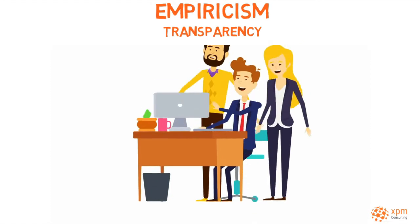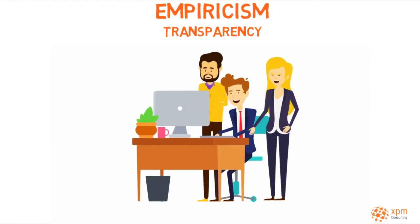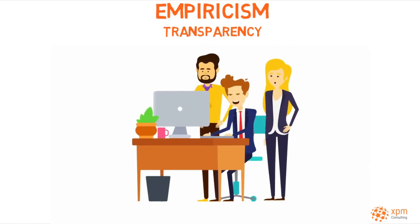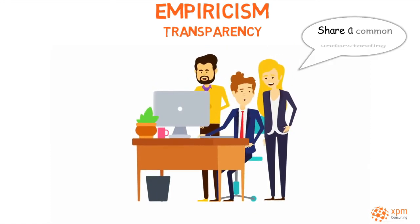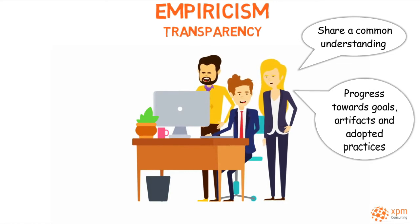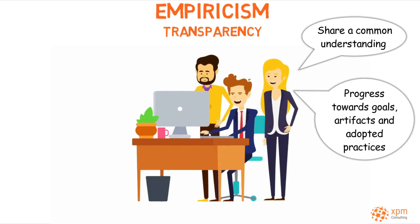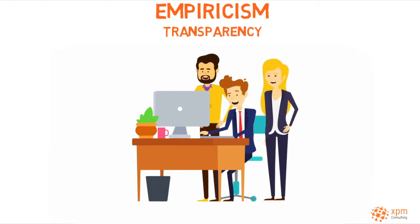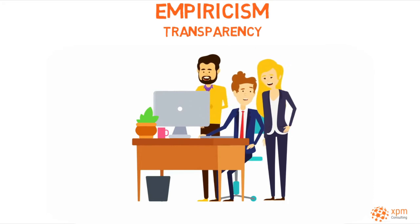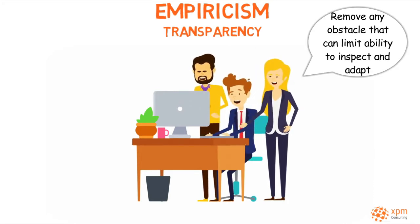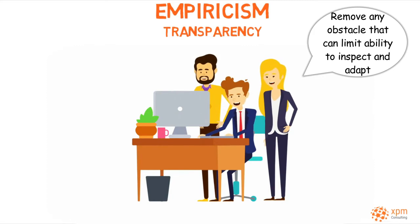The transparency pillar states that the Scrum team and relevant stakeholders should share a common understanding of the progress towards goals, artifacts and adopted practices. The Scrum team should also remove any obstacle that can limit its ability to inspect and adapt.